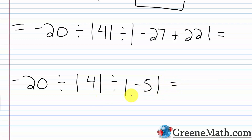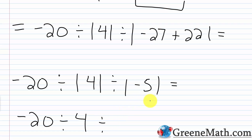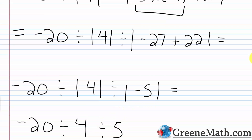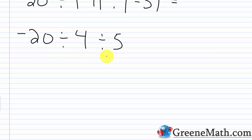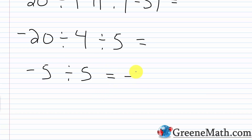Now I'm going to perform these absolute value operations. I'm going to have negative 20 divided by — the absolute value of 4 is 4 — and then divided by — the absolute value of negative 5 is 5. Now I just have division, and I'm going to work left to right. Negative 20 divided by 4 is negative 5. And then we're dividing by 5. Negative 5 divided by 5 is negative 1.